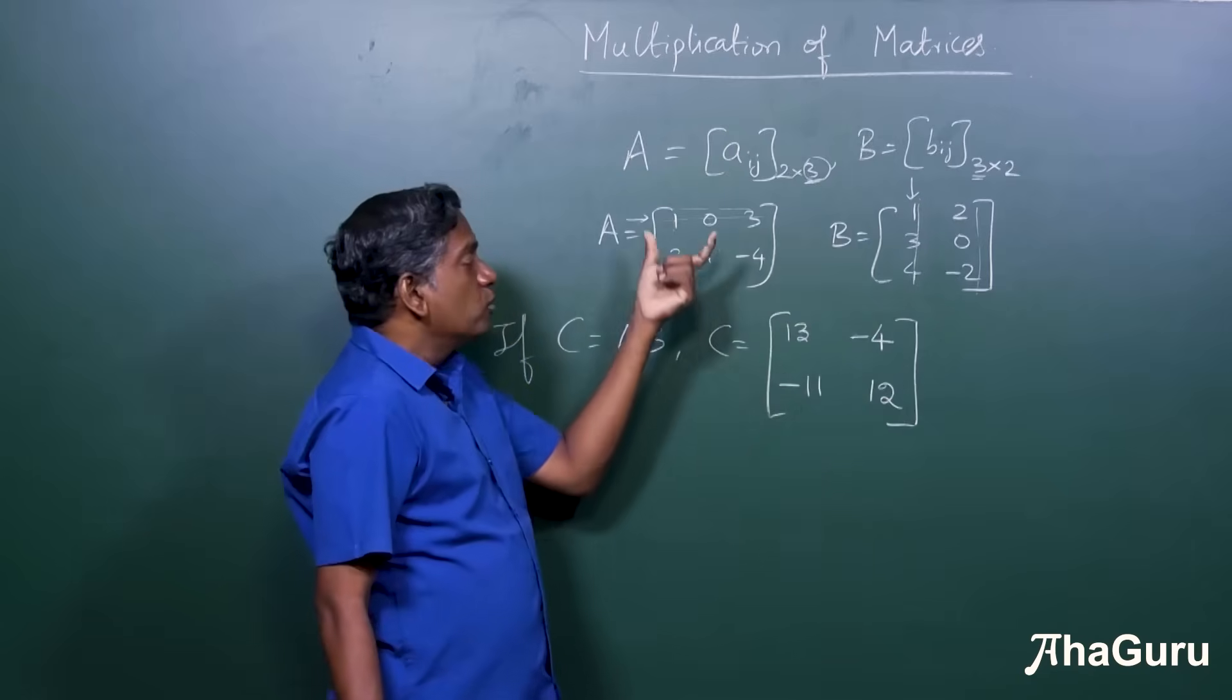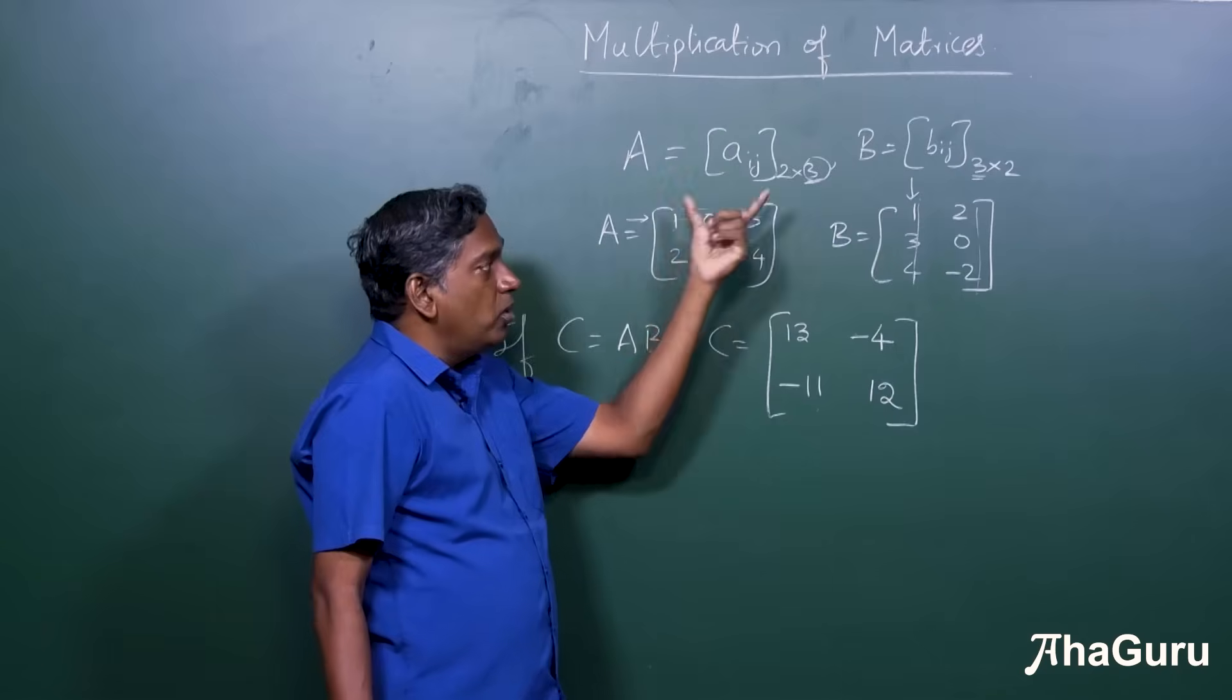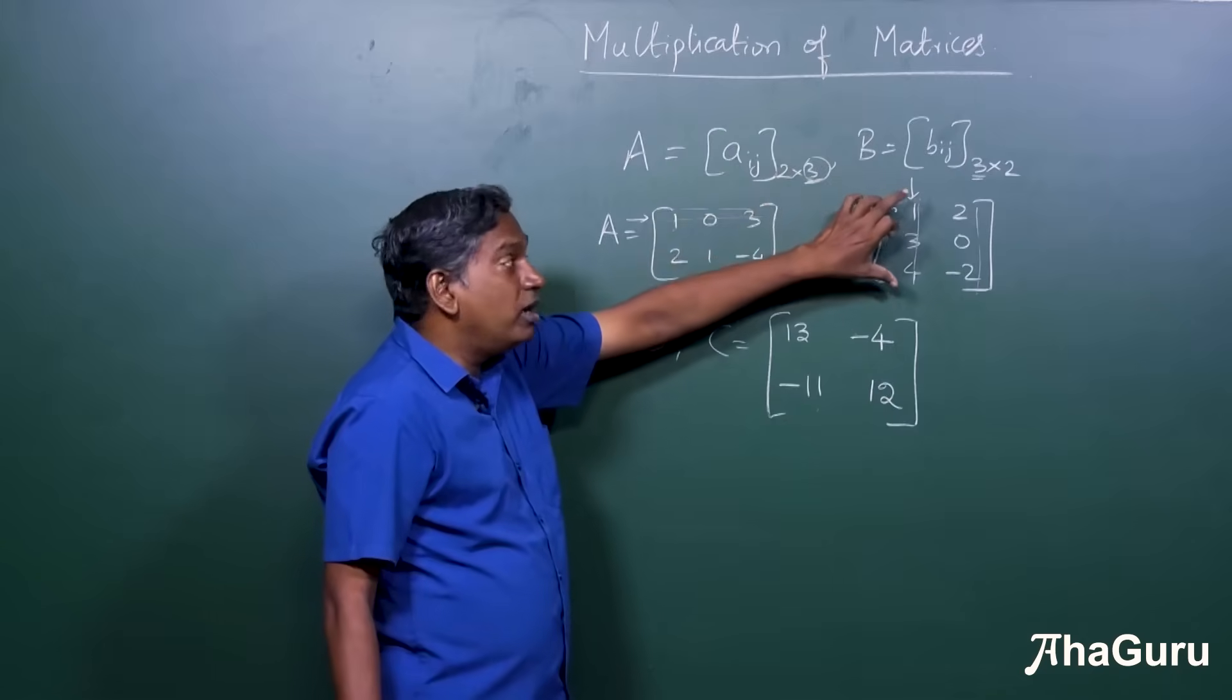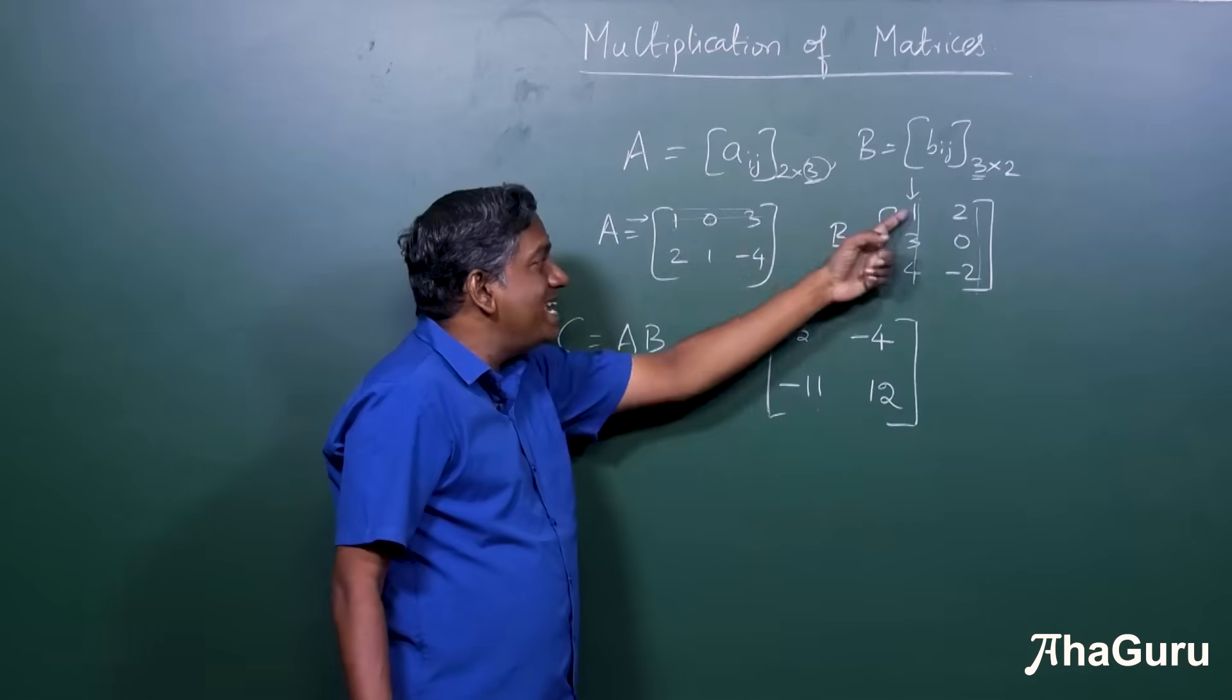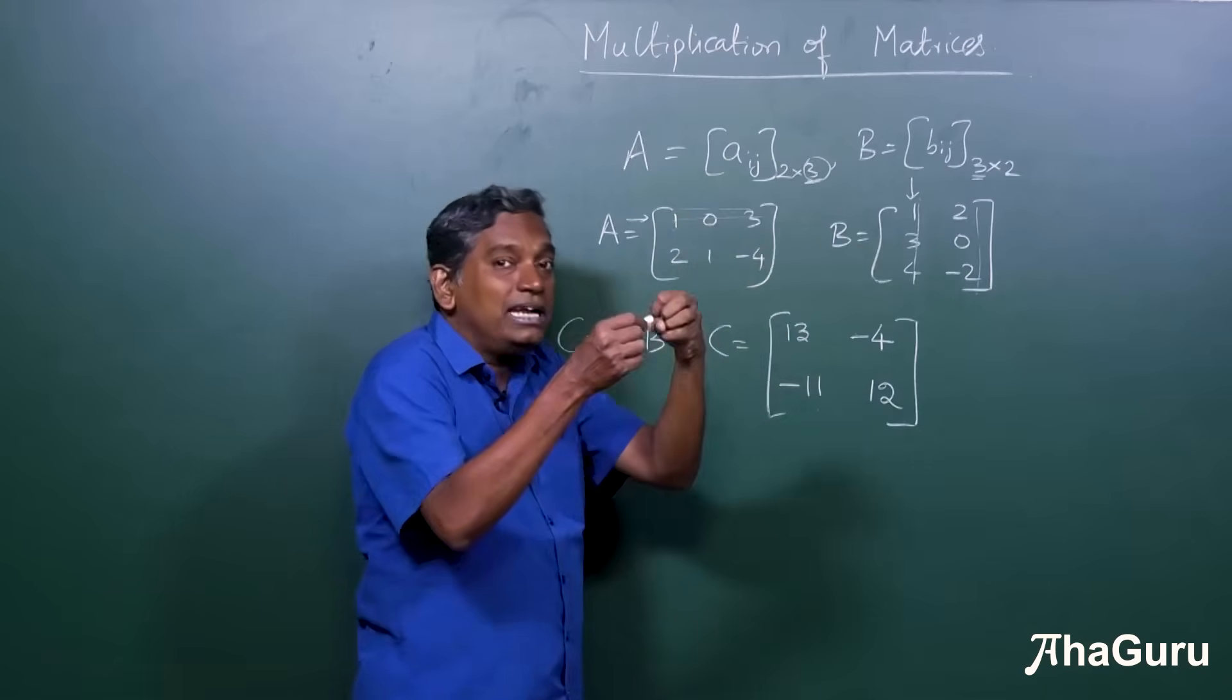It's not entry by entry at all. You multiply a row by a column. But what does it mean to multiply a row by a column? Multiply entry by entry and then add the products.